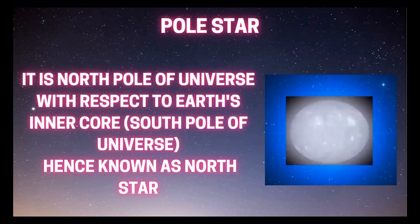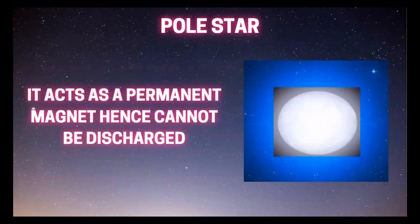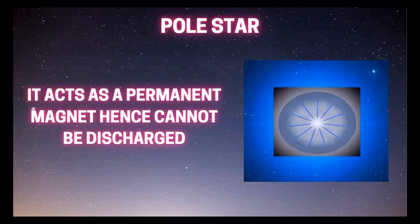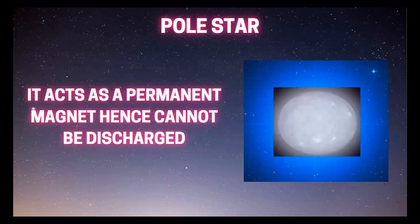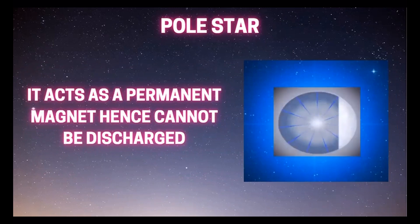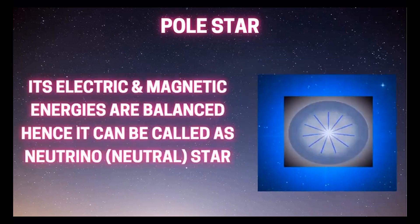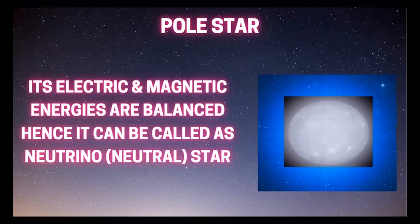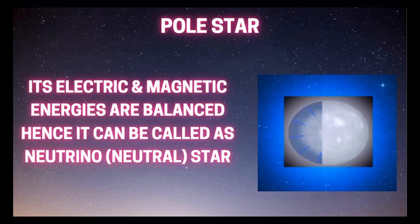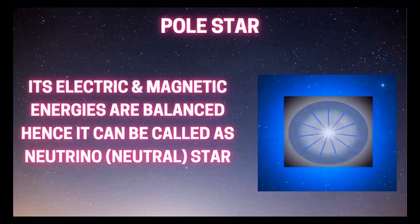That's why it is called the North Star. It acts as a permanent magnet — this Pole Star — so it cannot be discharged; that is the property of a permanent magnet. As the electric and magnetic energies of the Pole Star are balanced, that's why it is called a neutrino or neutron star.